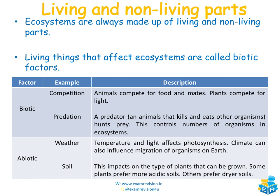The living things that affect ecosystems are called biotic factors, and the non-living things are called abiotic factors. Biotic factors include competition and predation. Animals compete for food and mates, while plants compete for space and light. Predation is where a predator — an animal that kills and eats another organism — hunts prey. The more predators there are, the more prey they eat, so the number of prey could fall.